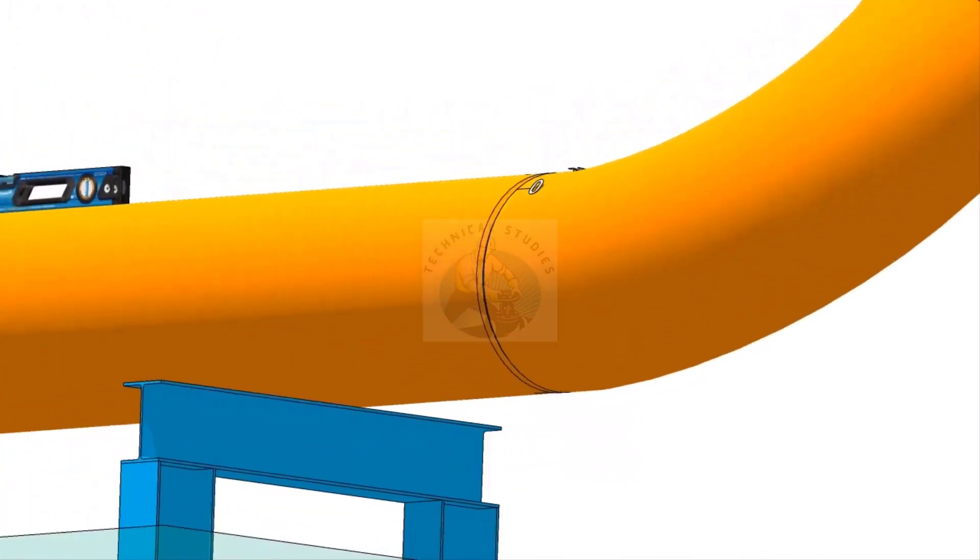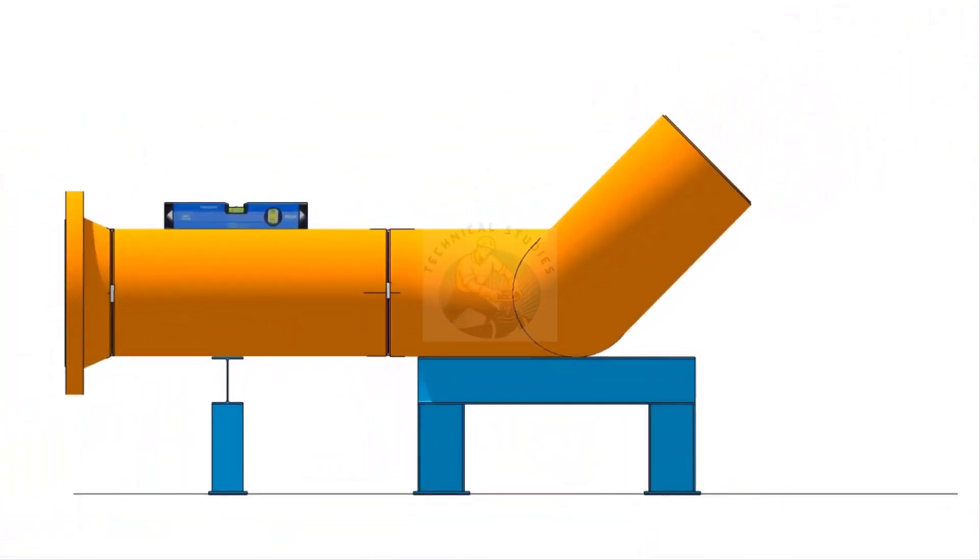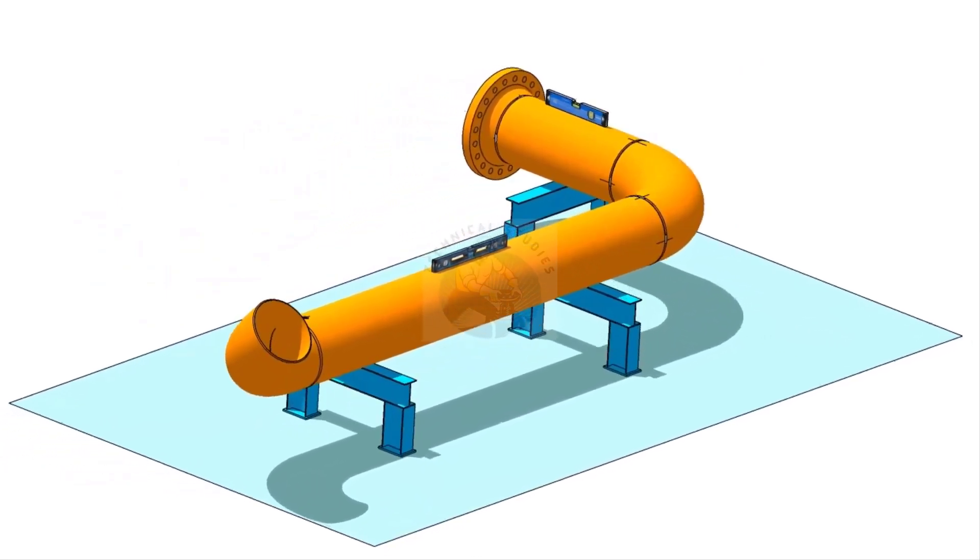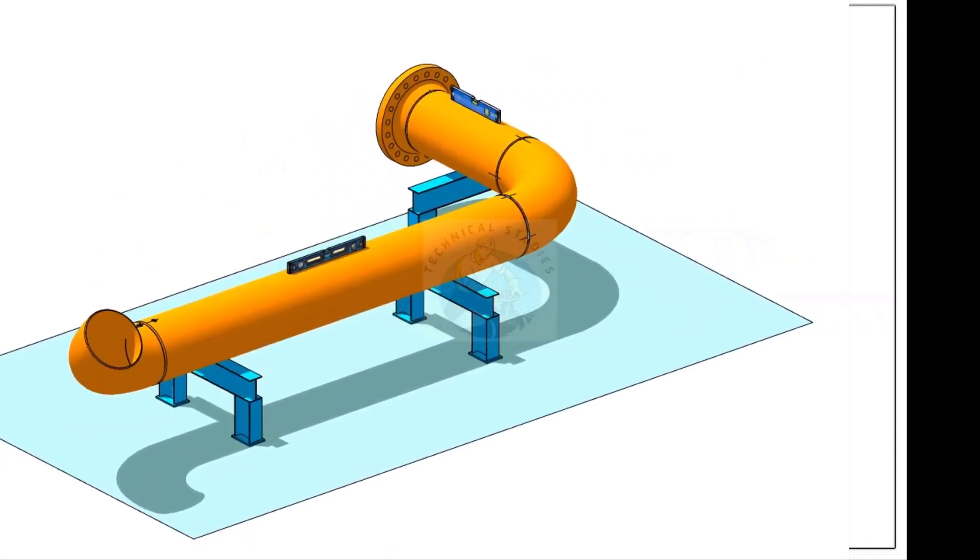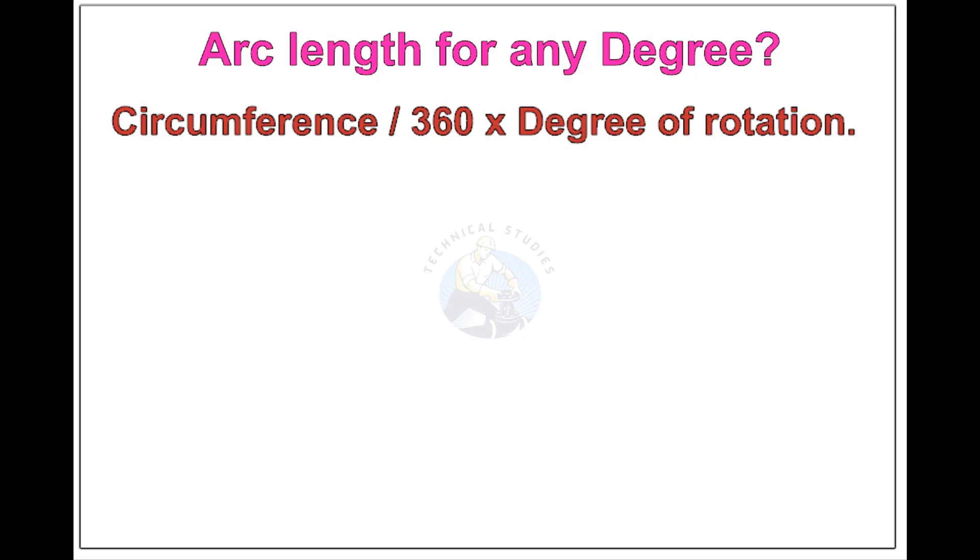I hope this video was helpful to you. Thank you for watching. Now see the formula and calculations for finding the arc length of any degree rotation with example. Arc length of any degree: circumference of the pipe divided by 360 into the degree of rotation. Let us check the arc length of 12-inch pipe rotated 30 degrees.